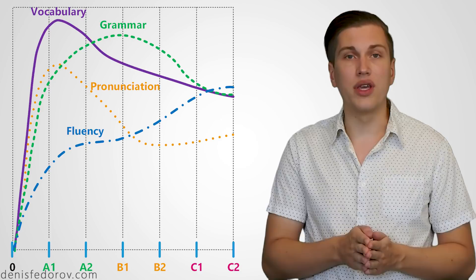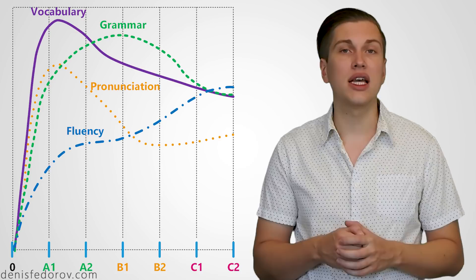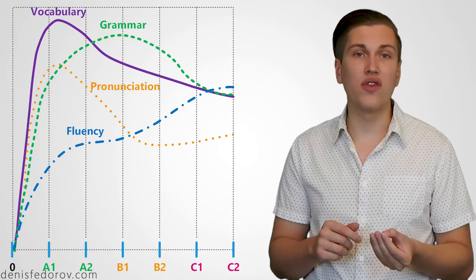For example basing on this diagram we can say that when starting to learn Russian you pay most of your efforts to developing a vocabulary, less efforts to grammar and pronunciation, and fluency is less important because on this elementary level of communication it doesn't matter that much.